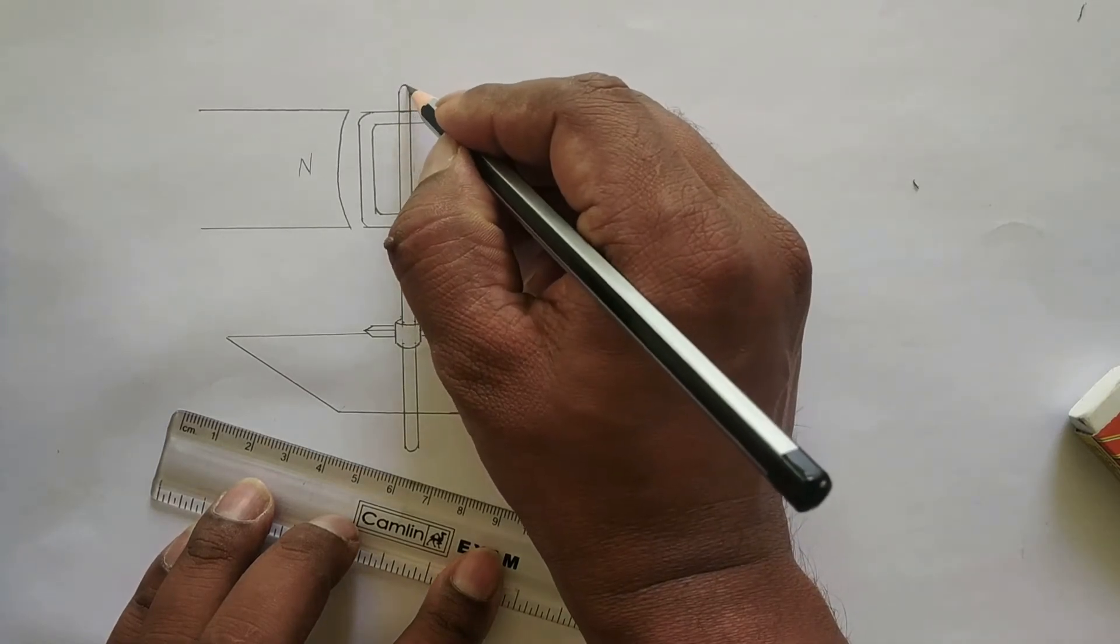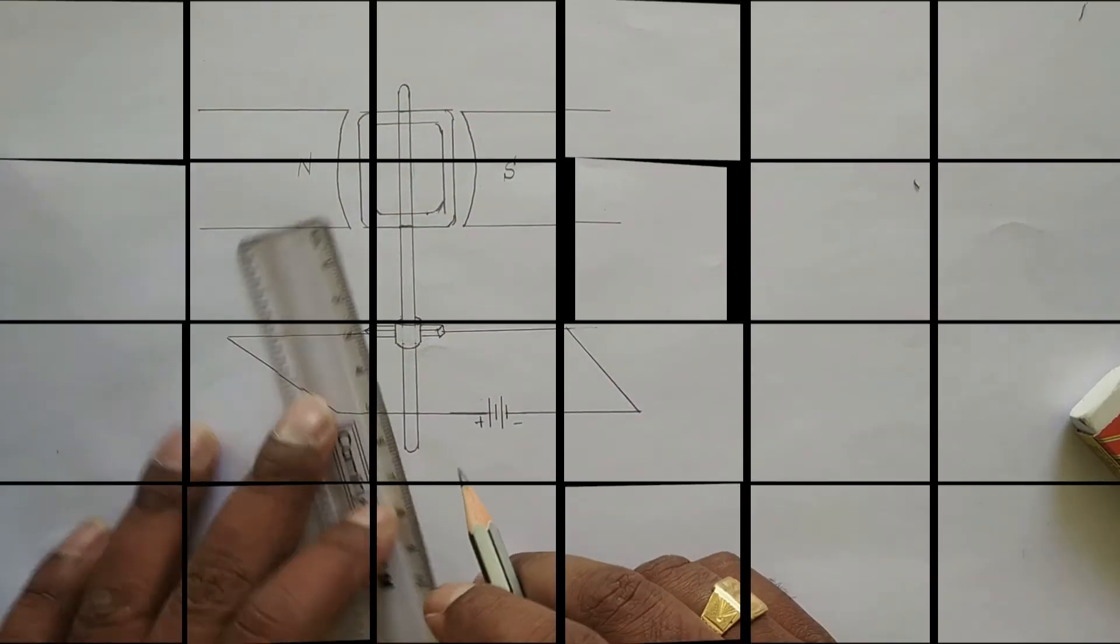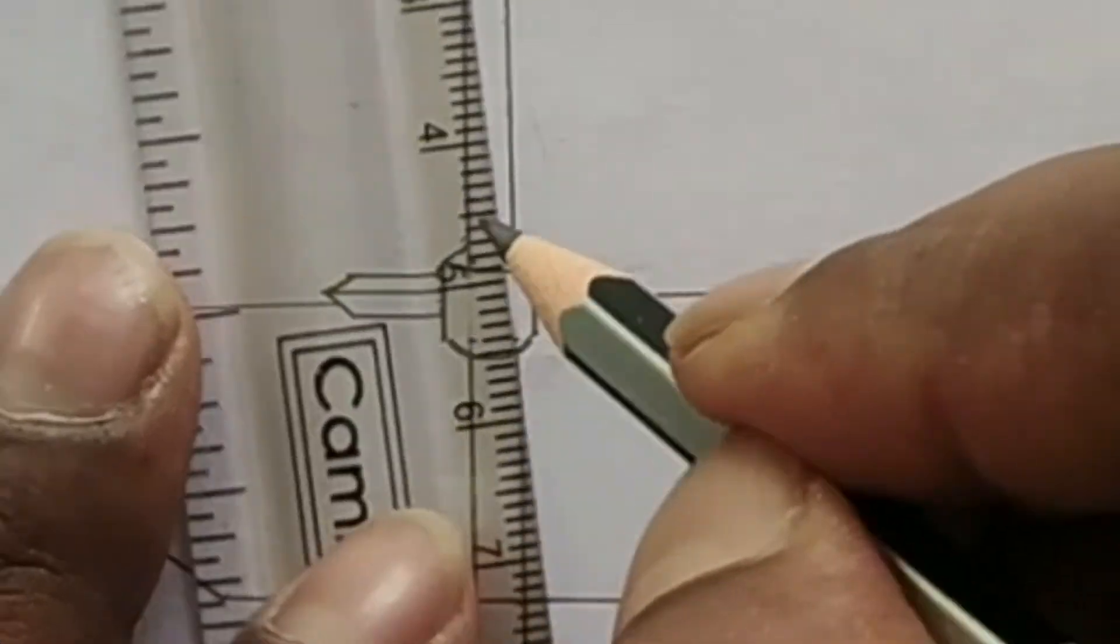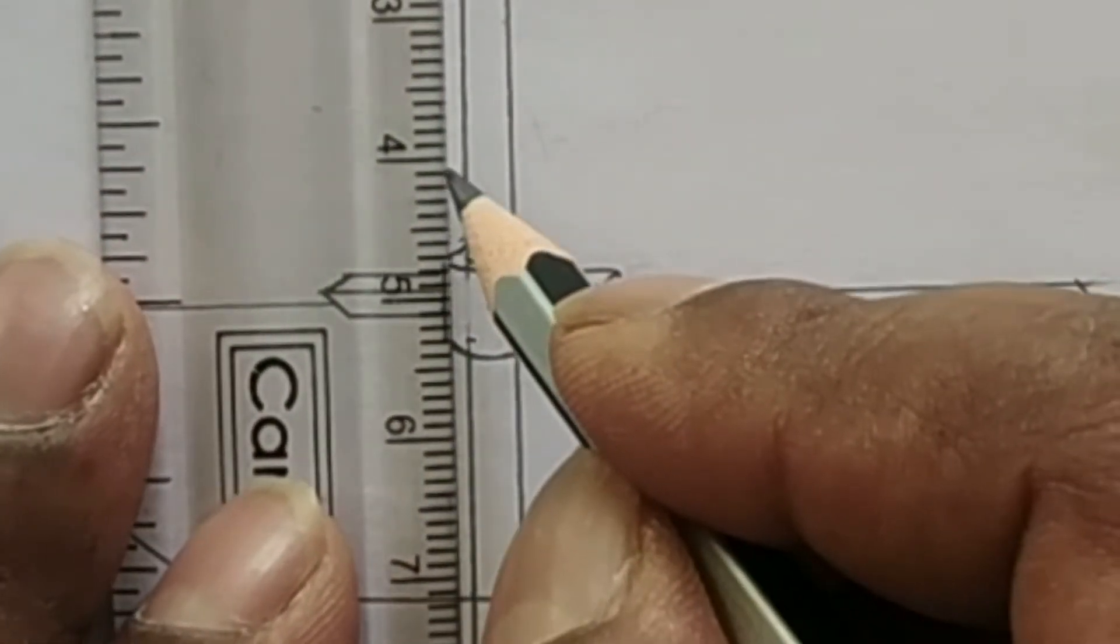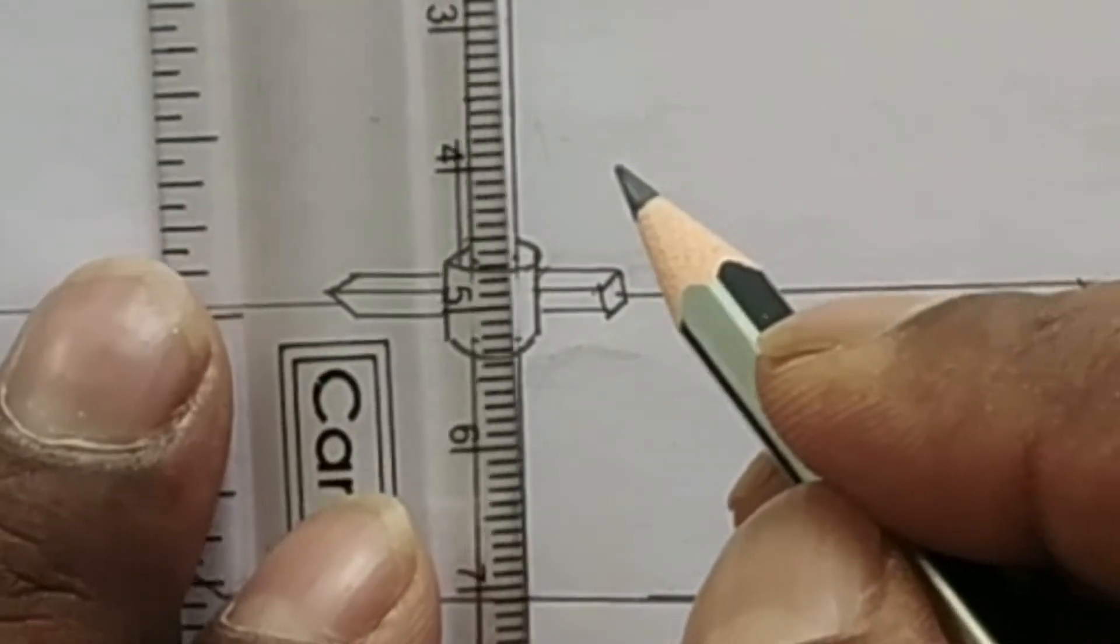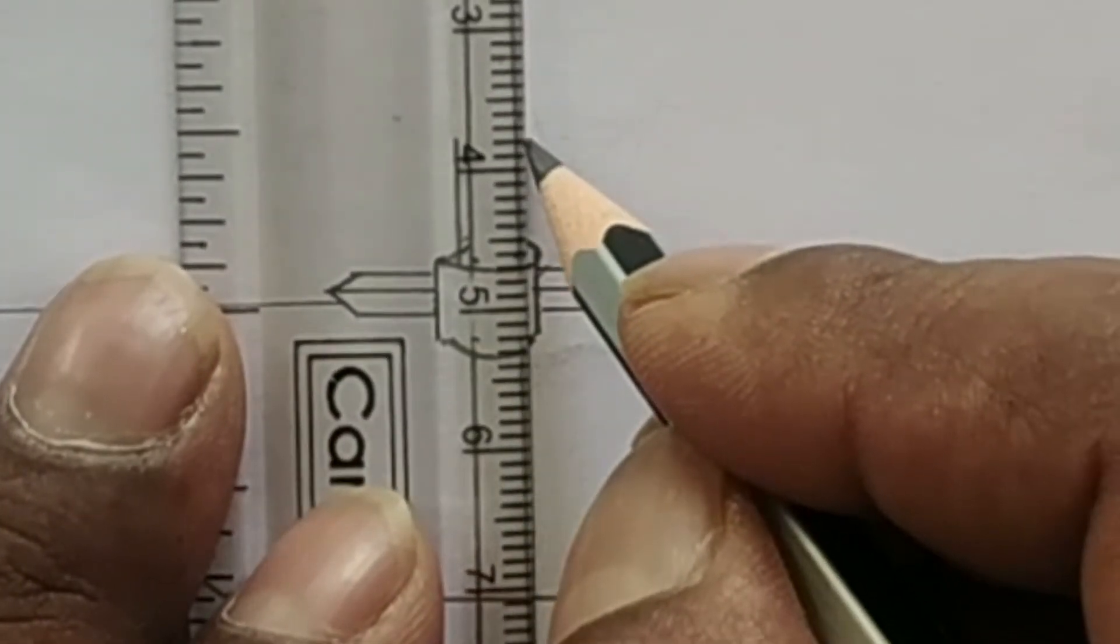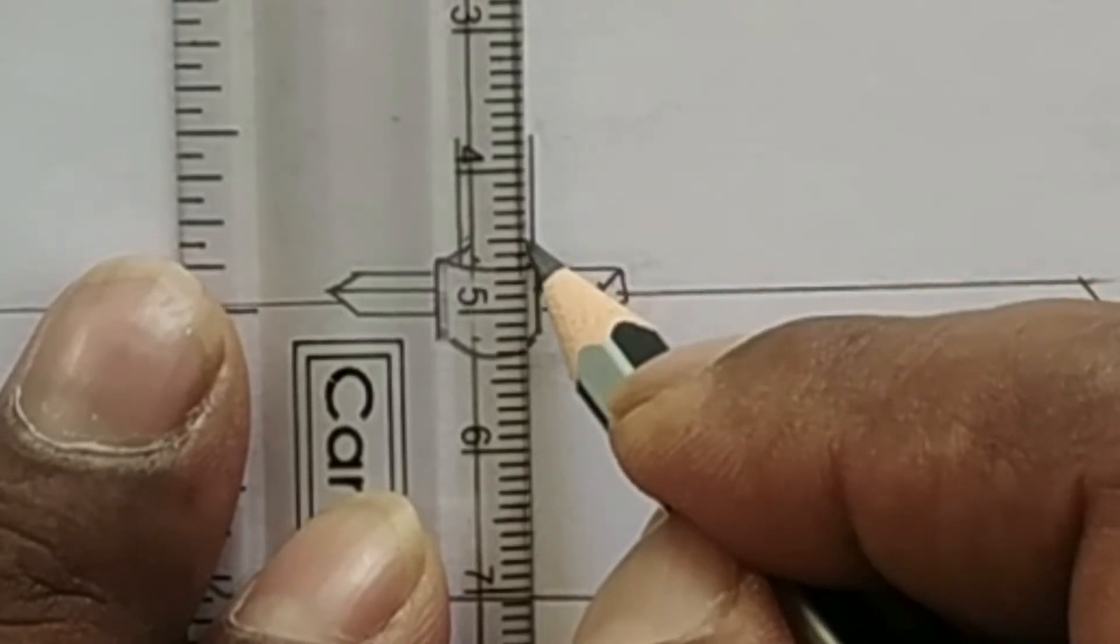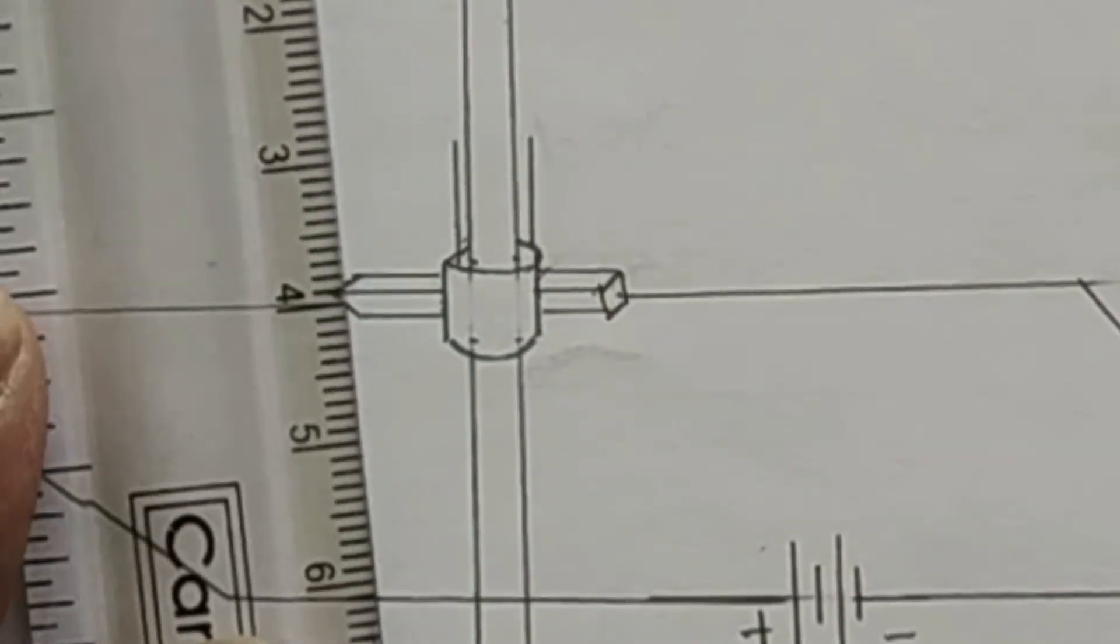Now you have to draw the lines that indicate the coil connected to the split rings. You have to erase this part.